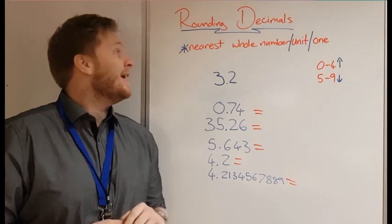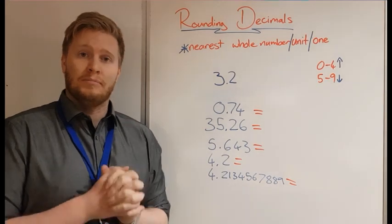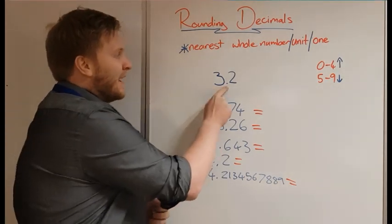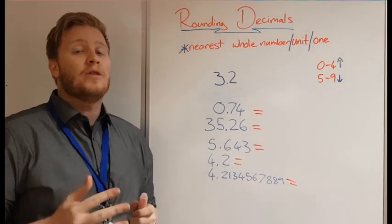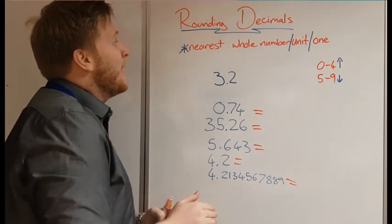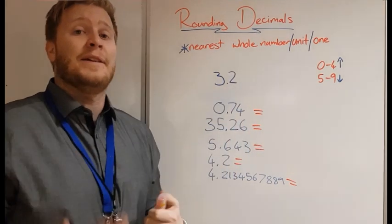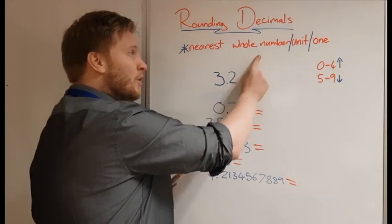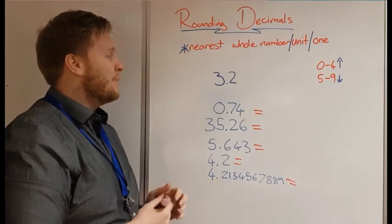Hi guys, it's Mr. B here, and today we're going to be looking at rounding decimal numbers. When we talk about a decimal number, we mean a number with a decimal point and some decimal places after it. We're going to look at how we can round them to different things. The first place we're going to look at is rounding to a whole number, a unit, or a one — these all mean the same thing.